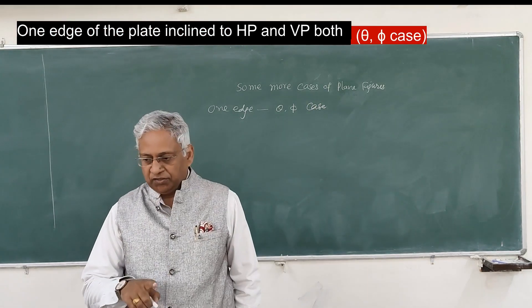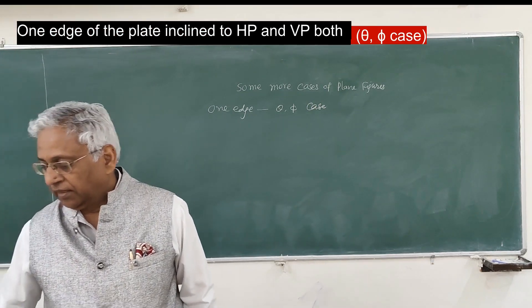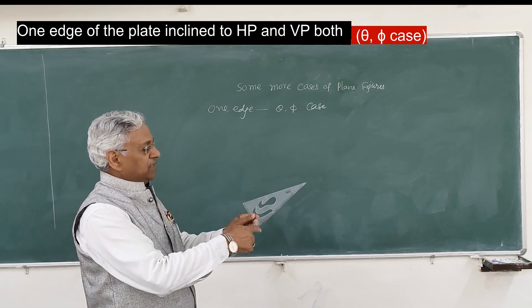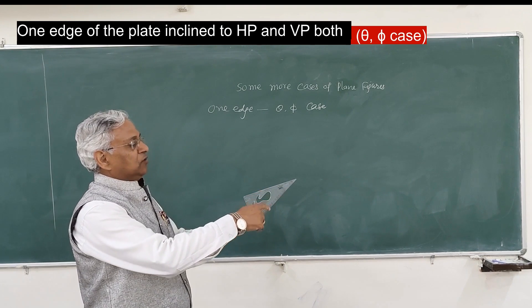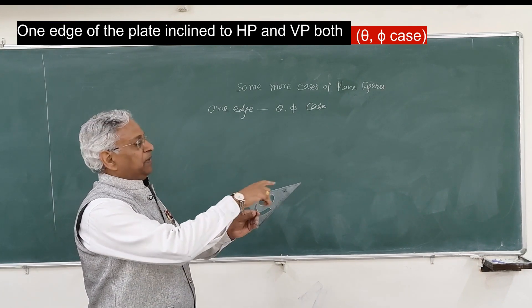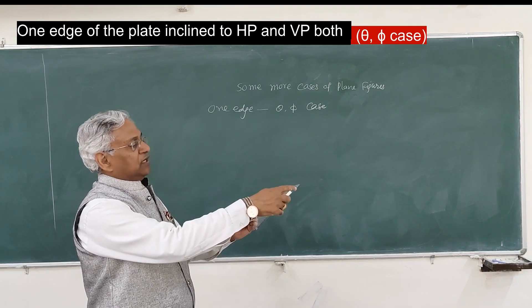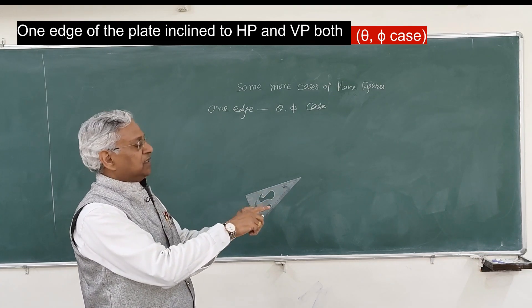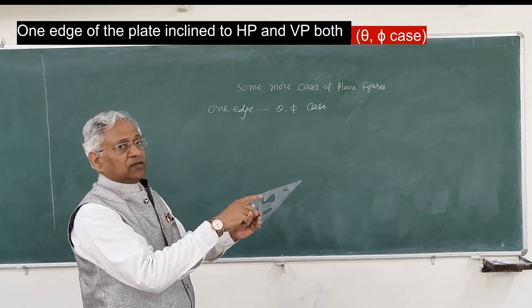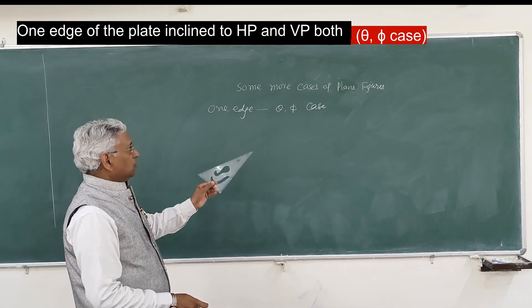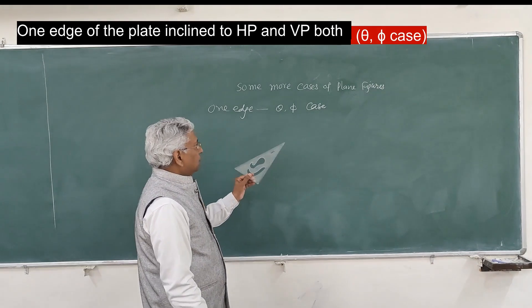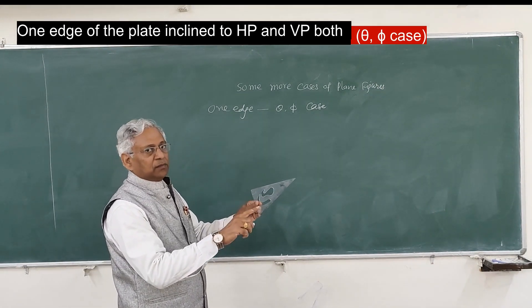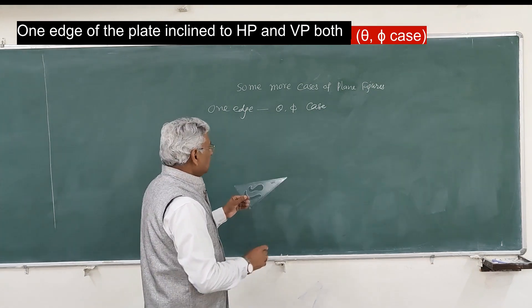One edge of a plate is inclined to both planes. The plane figure can assume any position — it can rotate about this line — but this line is fixed, inclined to the horizontal plane and vertical plane. Therefore, to solve this case, we solve it like a line inclined to both the horizontal plane and vertical plane.